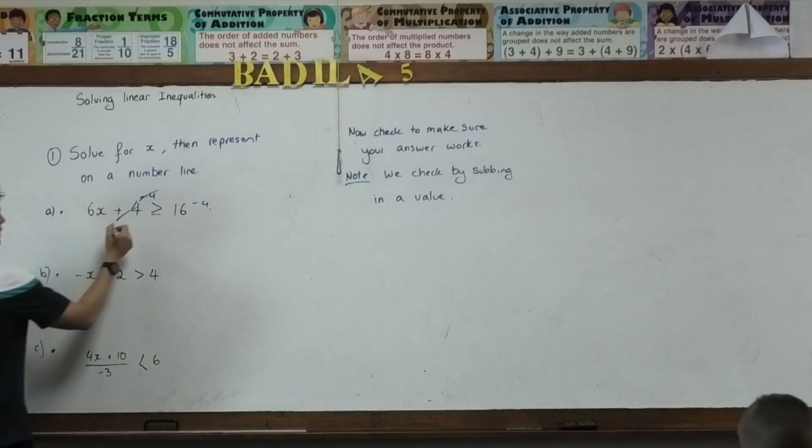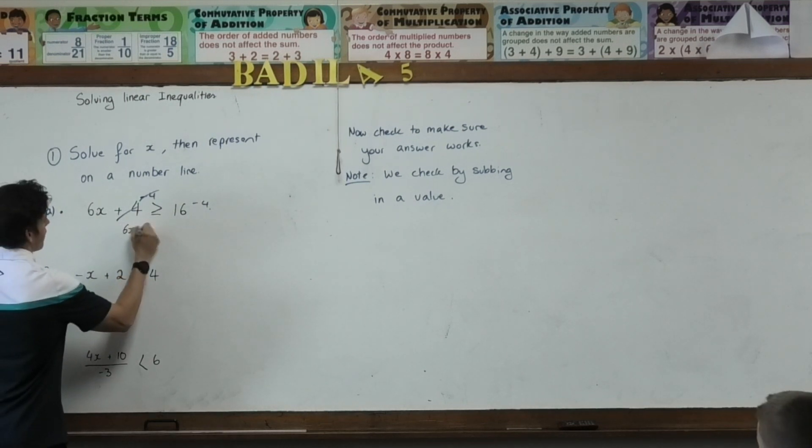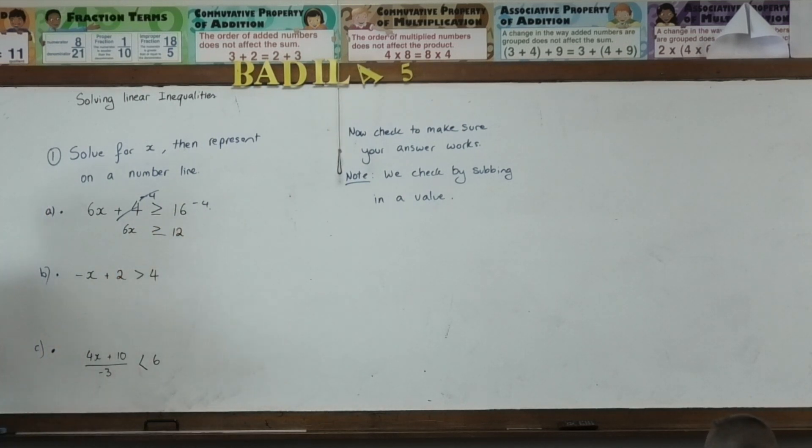So, I've now got 6X. 6X is greater than or equal to 12. What's stopping the answer from being by itself, Jay? On the left-hand side here, what's... 6. 6, how do I get rid of it?